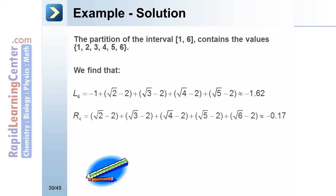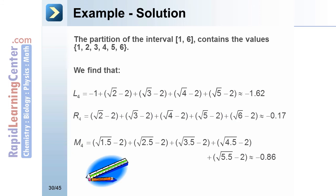M₅ equals the square root of (1.5 minus 2), plus the square root of (2.5 minus 2), plus the square root of (3.5 minus 2), plus the square root of (4.5 minus 2), plus the square root of (5.5 minus 2), which is approximately negative 0.86.